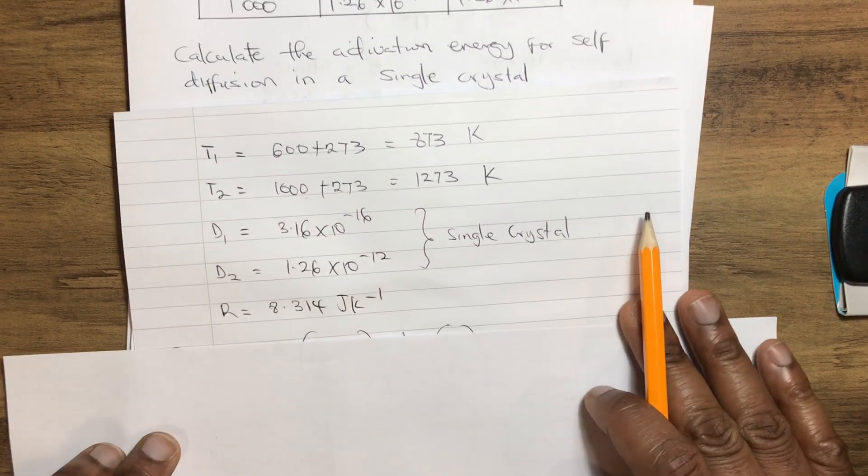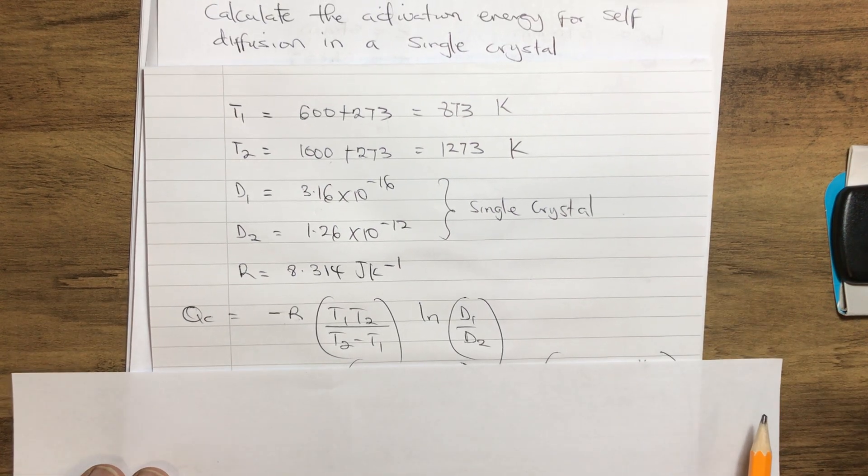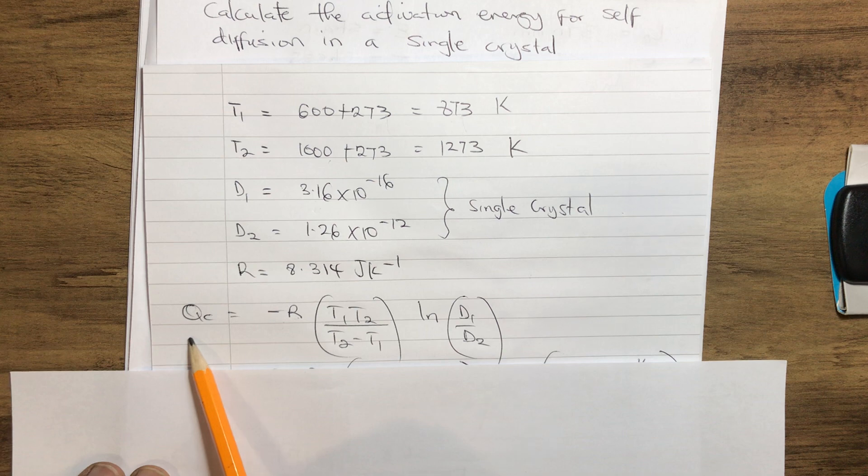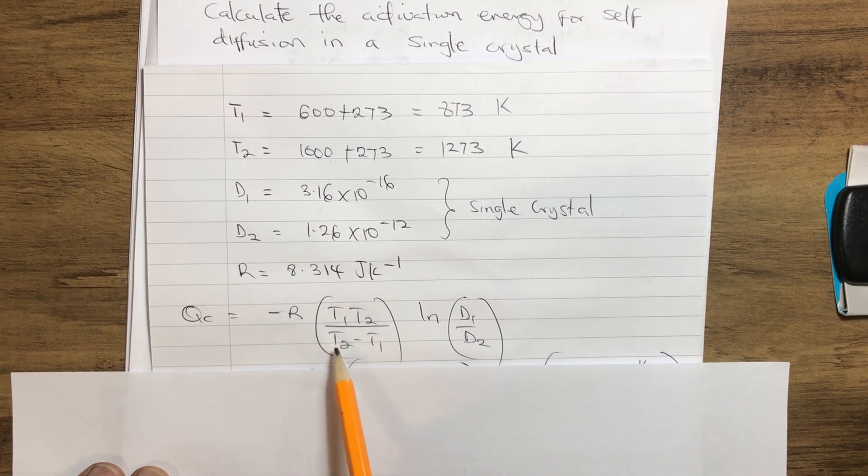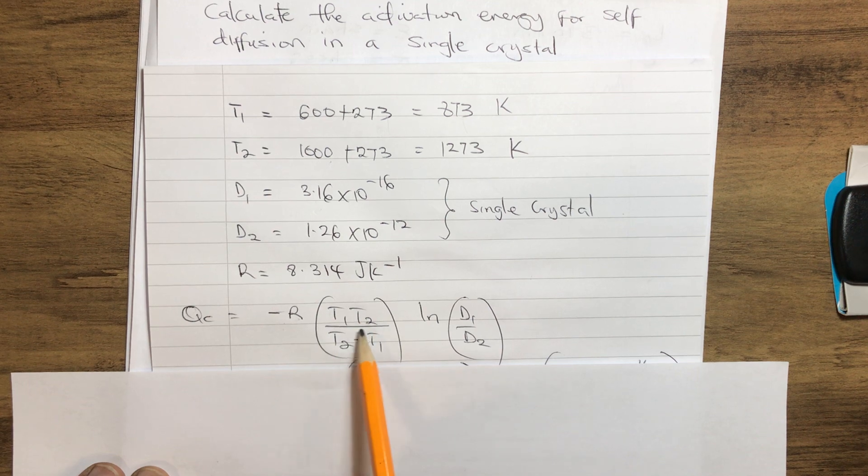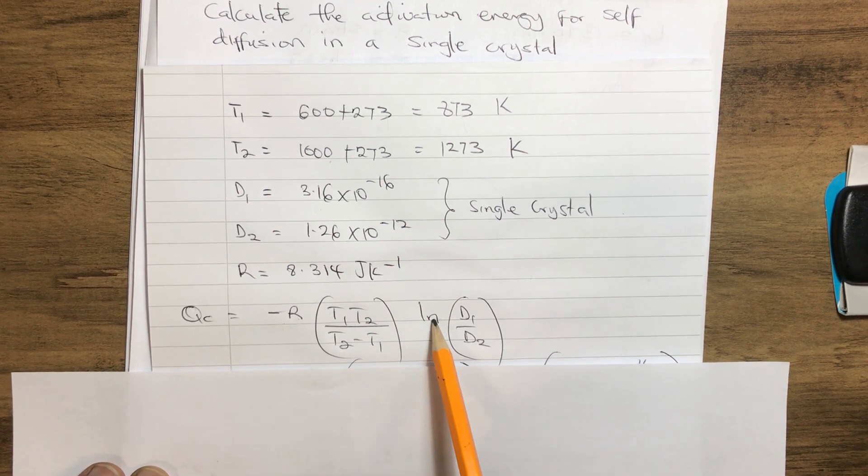To do this, we need the activation energy formula, which equals: Qc = -R(T₁T₂)/(T₂-T₁) multiplied by natural logarithm of D₁/D₂.